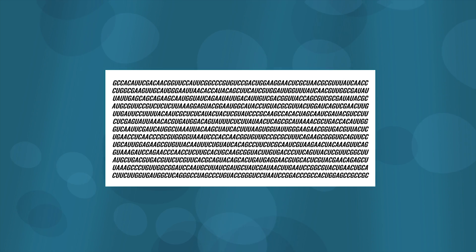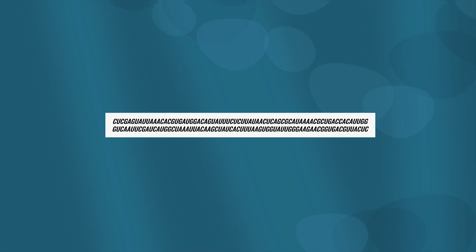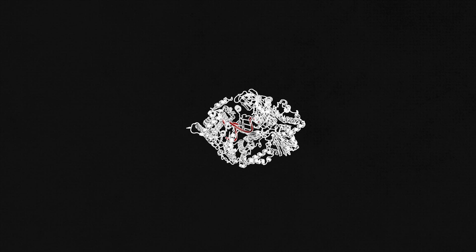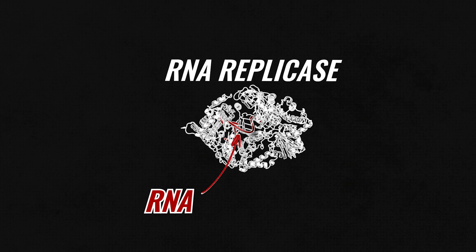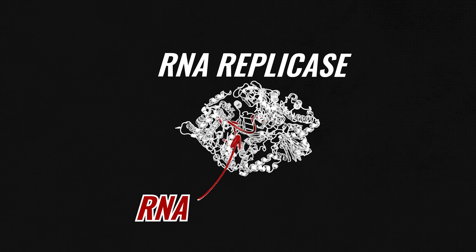In later tests, the Spiegelman monster grew even shorter, to around 50 nucleotides. This strand of 50 nucleotides was the shortest needed for the binding of the RNA replicase enzyme to the RNA. It was all that was needed for dominating the test tube world.